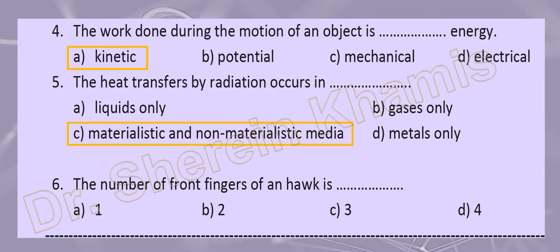Question number six: the number of front legs of a hook. We have different kinds of insects. All insects have three pairs of legs, so the number of front legs of a hook is three. The total number of legs for all insects is six.